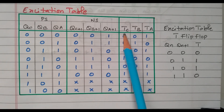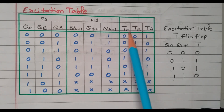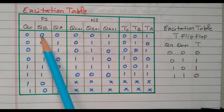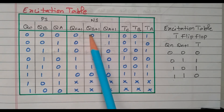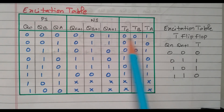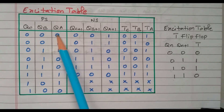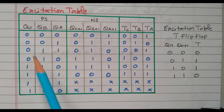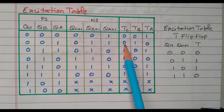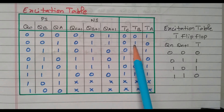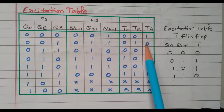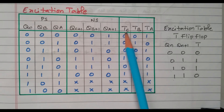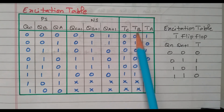For each row we determine the T flip-flop inputs TC, TB, TA. For state 000 → 001: QC no change so TC=0, QB no change so TB=0, QA changes 0→1 so TA=1. For 001 → 011: QC no change TC=0, QB changes 0→1 TB=1, QA 1→1 no change TA=0. Like that we fill the entire excitation table for all six present states. Then we find expressions for TC, TB, and TA using K-map reduction.